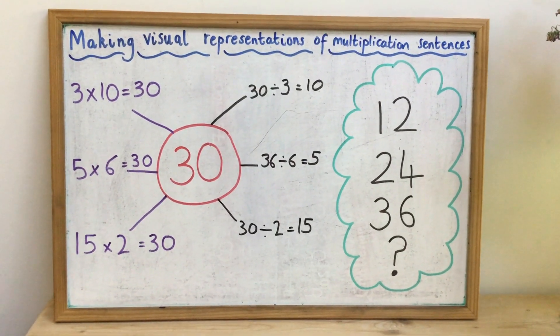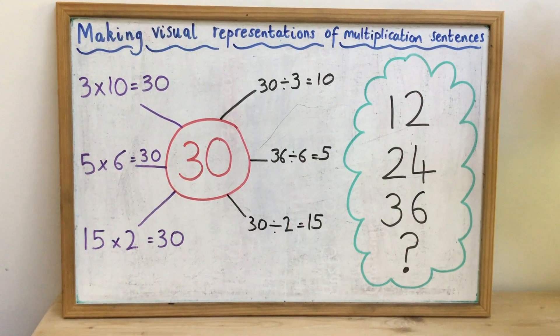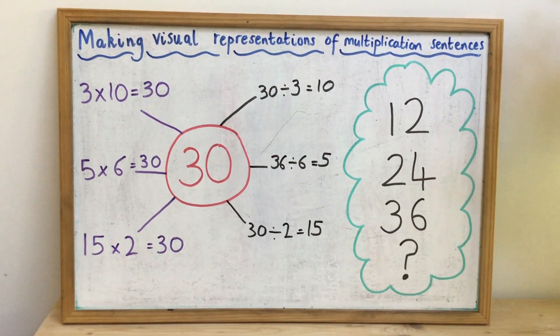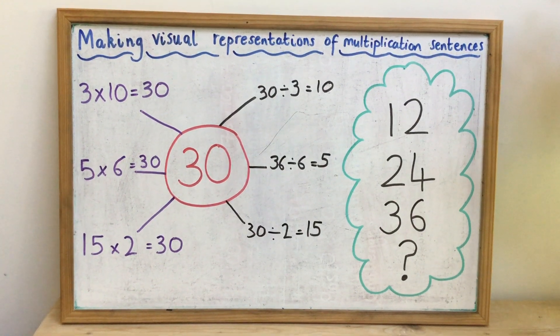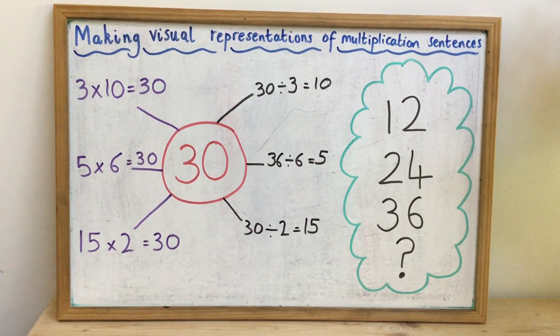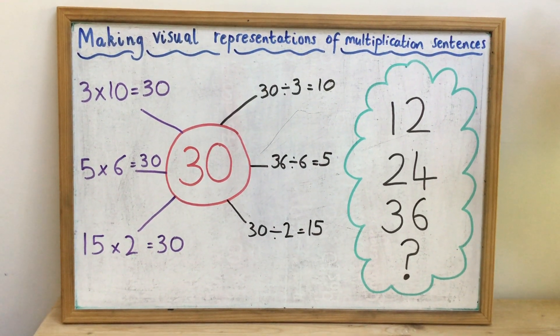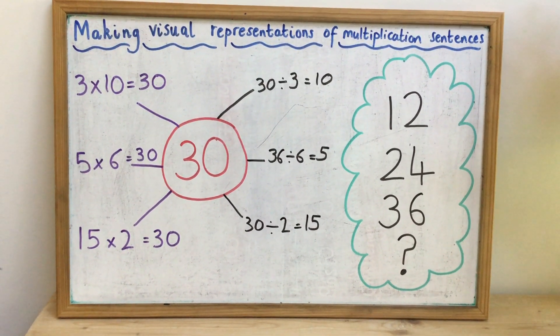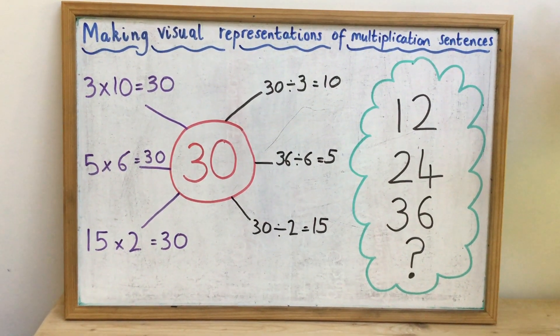Now what I've done is choose a number and the number that I've chosen is 30. And I wanted to make visual representations of multiplication sentences that made 30. So I had a really good think about the times tables that I knew and I wanted to know which times tables 30 was in.